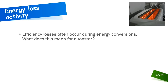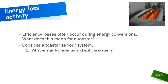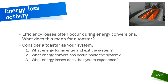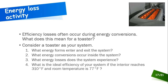Let's look at energy losses using a toaster as an example. Losses in efficiency often occur during energy conversions. Consider the toaster as our system and answer: what energy forms enter and exit? What energy conversions occur inside? What energy losses does the system experience? And what is the ideal efficiency if the interior reaches 310°F and room temperature is 77°F? Pause the video and try answering before we review.